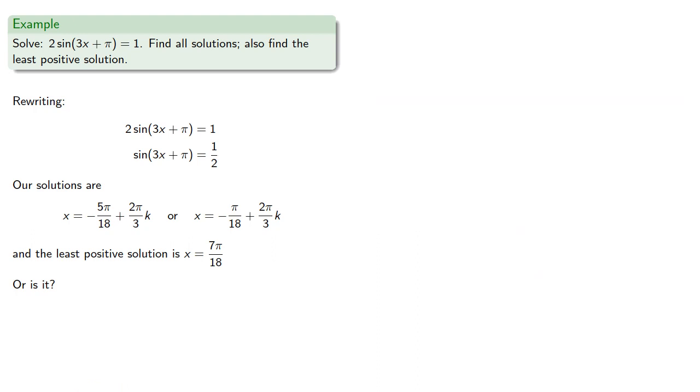And for these solutions, the least positive solution will be where k equals 1. And so we find, and our other solution, 7pi over 18, is actually the least positive solution. And so we'll go with it.